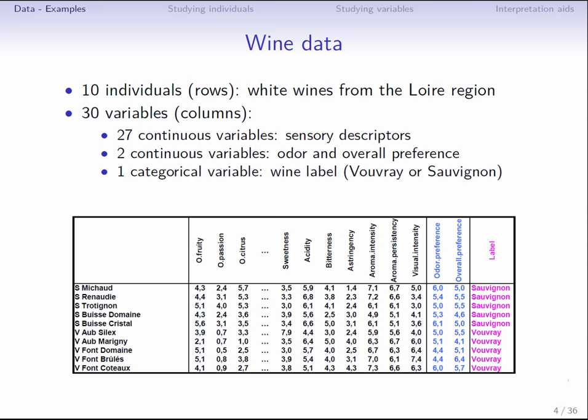In our dataset, we have also two quantitative variables that correspond to preference: preference in terms of odor and overall preference. We have also a qualitative variable representing different wine labels. There are two labels here. The first is Sauvignon, and the second is Vouvray. We will see later how we can consider this information in the analysis. The aim of doing PCA here is to characterize the wines according to their sensory characteristics. So first, we will focus on the 27 sensory characteristics for characterizing the wines.